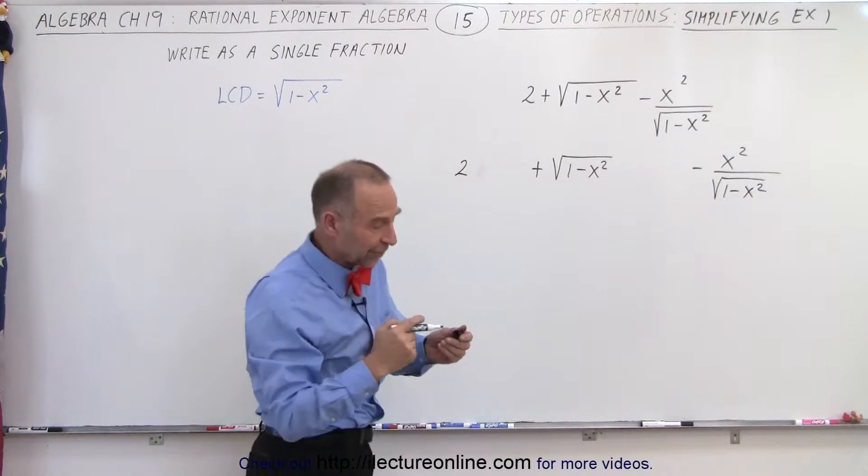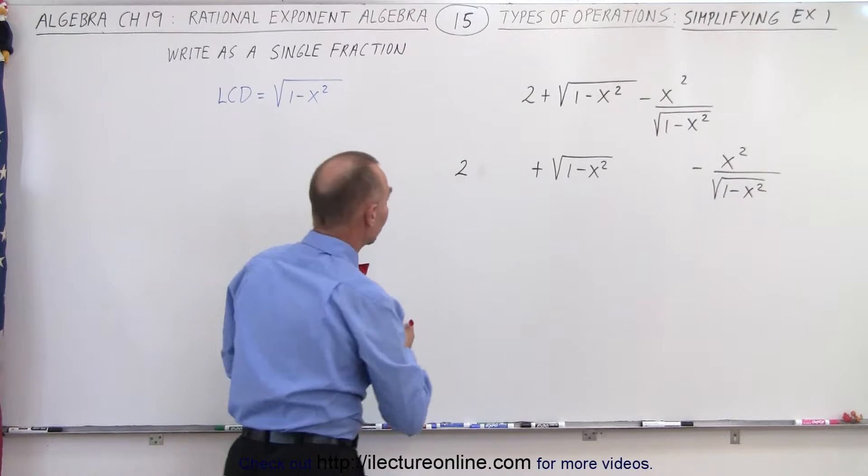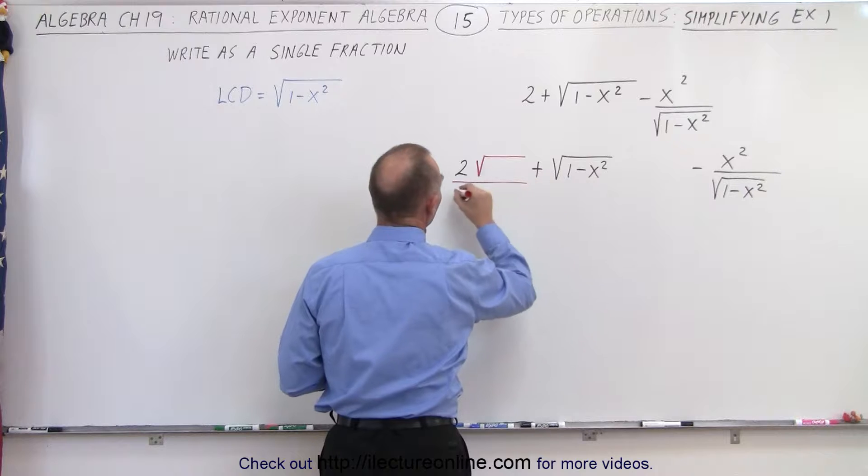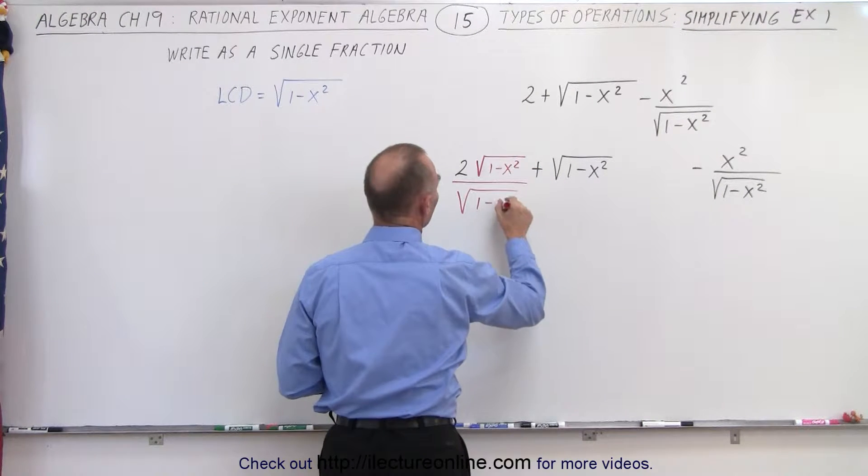You might wonder why did I leave all that space? Well, that will become evident in just a moment. Now I'm going to multiply both the numerator and the denominator by the square root of 1 minus x squared.